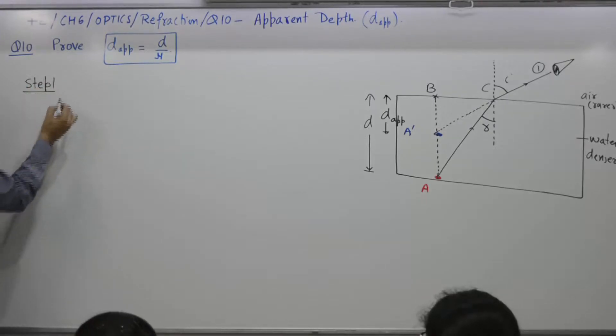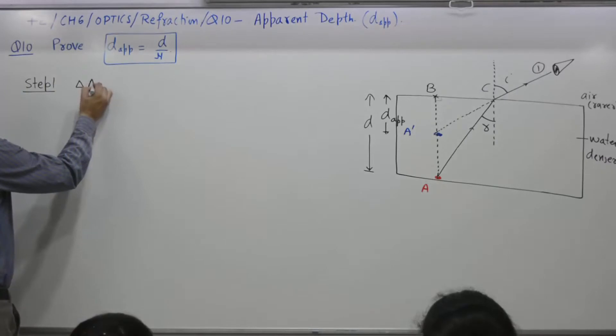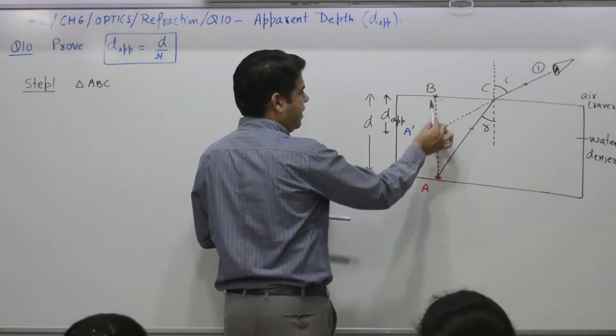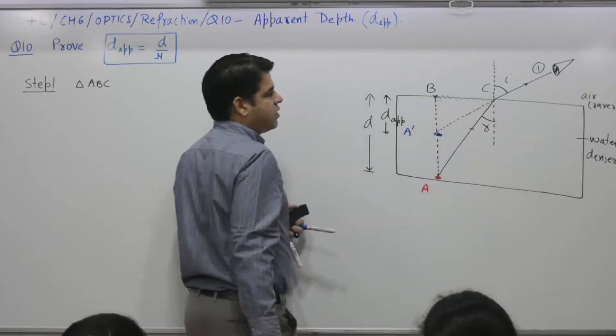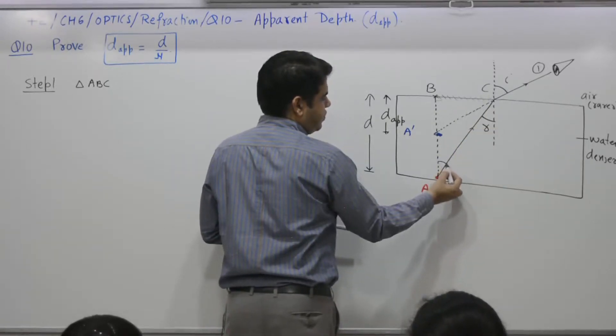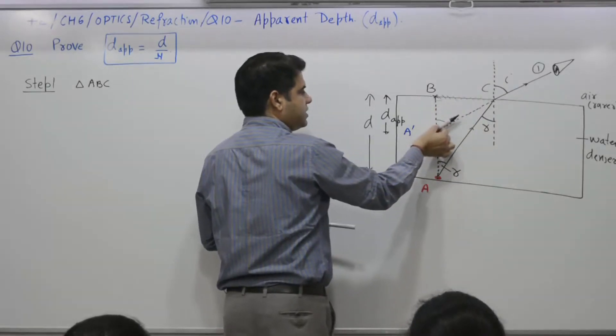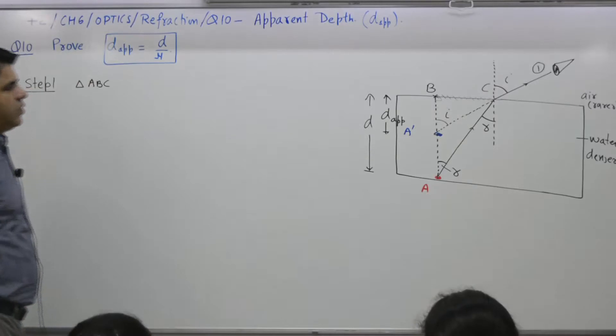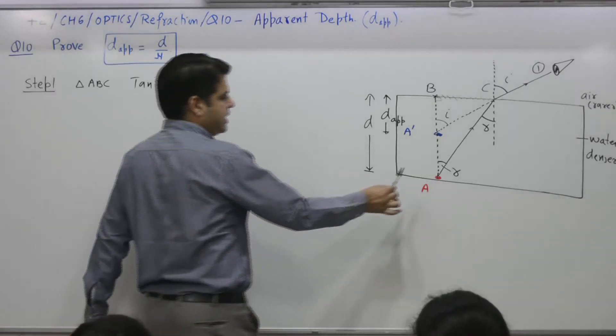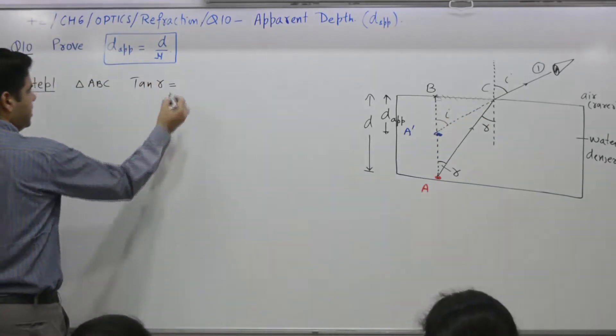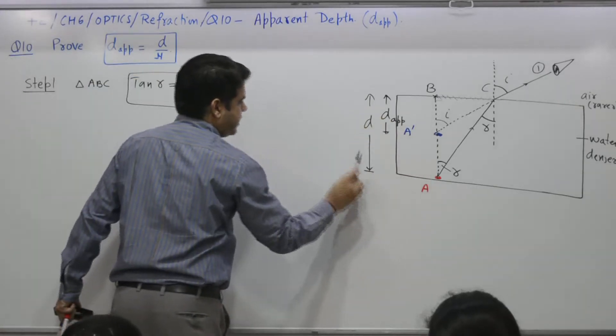Step 1. Triangle ABC, it is a right angle triangle. In these two triangles, ABC and A dash BC, this part BC is common. For triangle ABC, tangent R is what? BC by AB. AB is what? D. This distance A to B is distance D. Equation number 1.